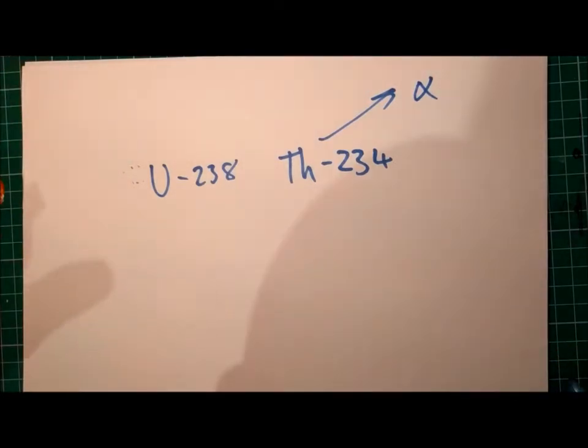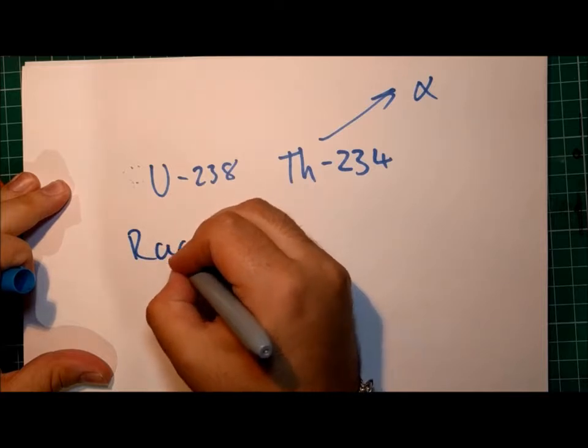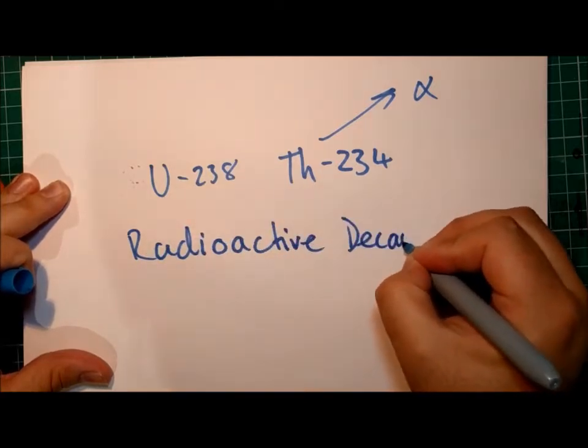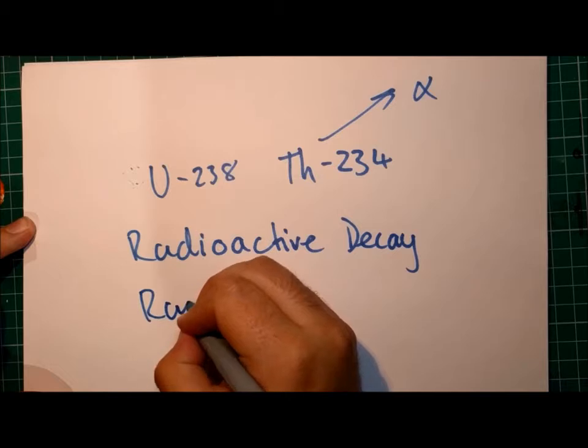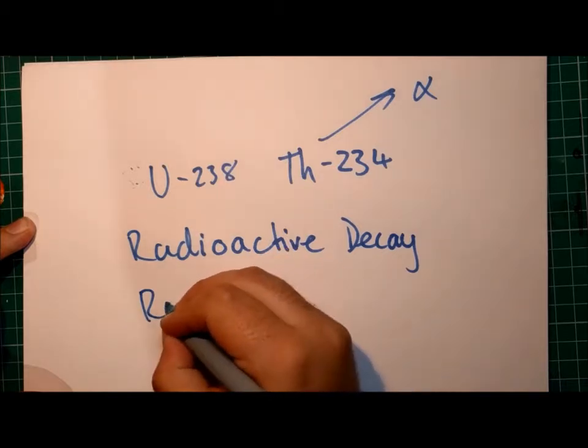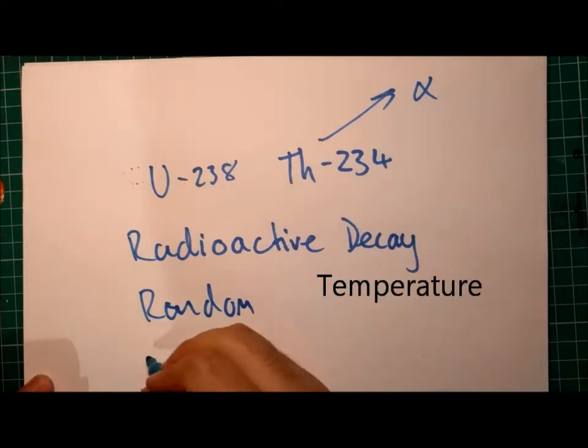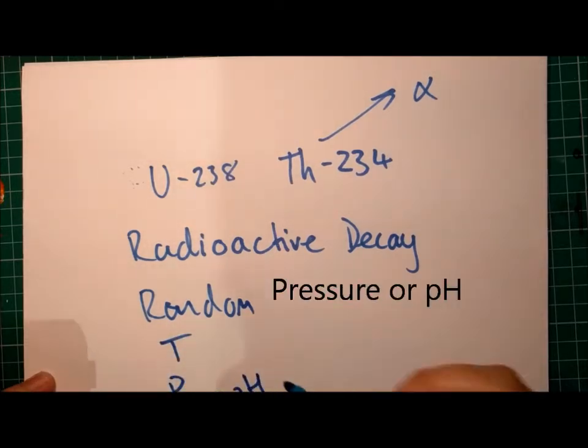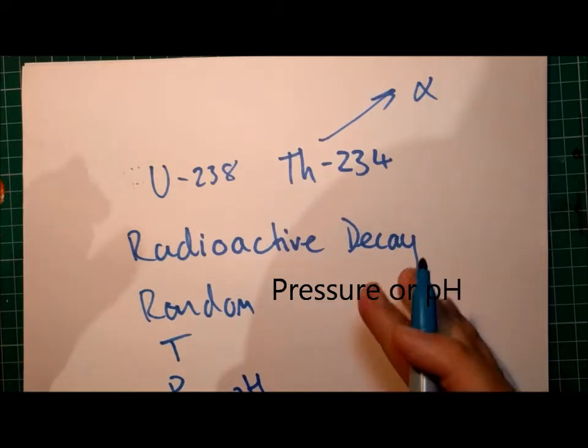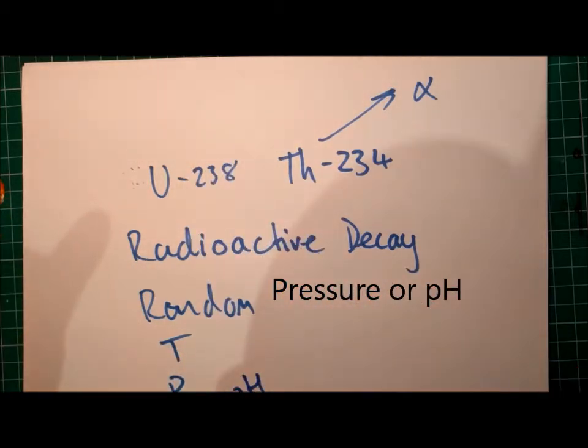Now this process is called radioactive decay, and this is an entirely random process. It is not affected by physical conditions such as temperature, pressure, pH, or the chemical bonds that the thorium atom is itself in. This is a process that happens in the nucleus of the atom and doesn't involve the electrons directly.